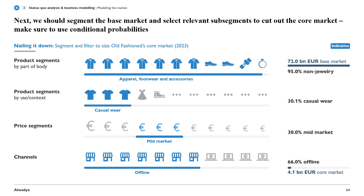Next, we have the price segments. Old-Fashioned only operates in the mid-market segment — so for example, not in the luxury segment — which gives us 30% of the casual wear, non-jewelry market.